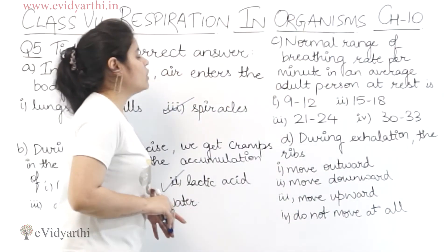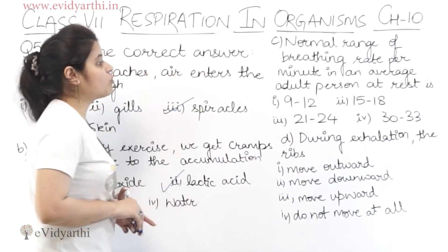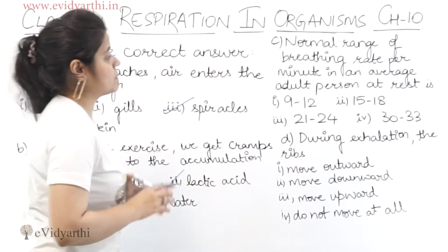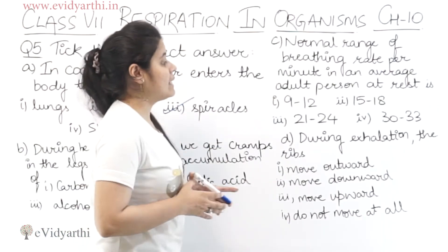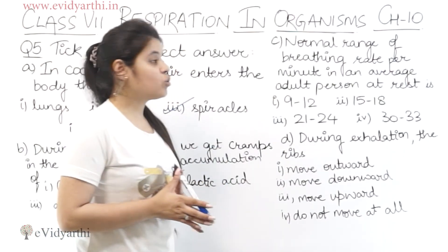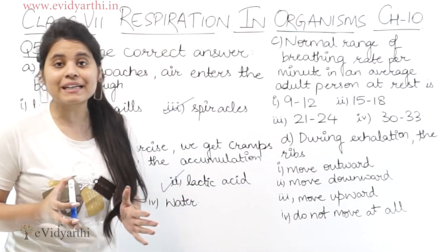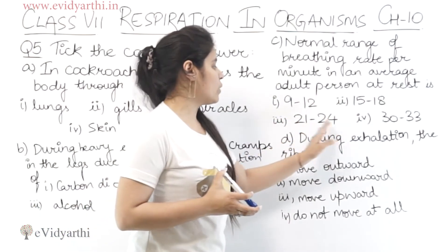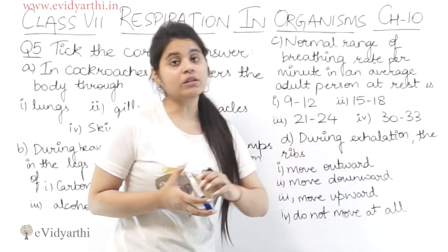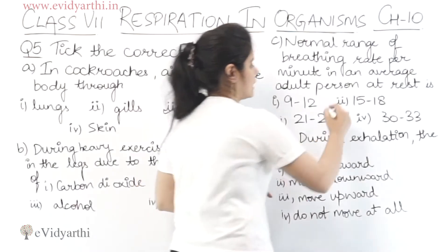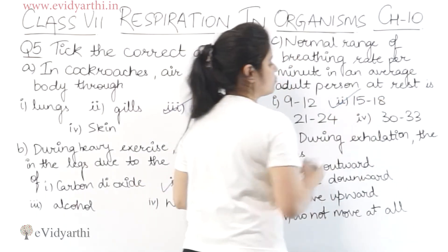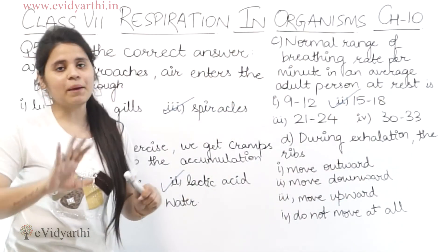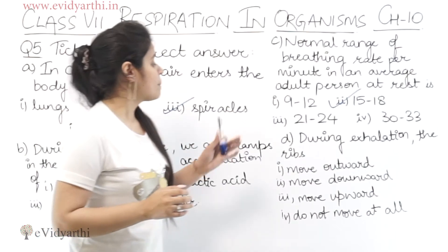Moving to the next one. Normal range of breathing rate per minute in an average adult person at rest is — 9 to 12, 15 to 18, 21 to 24, or 30 to 33. So the correct one is 15 to 18। मतलब इसके बीच में एक normal breathing rate होता है।